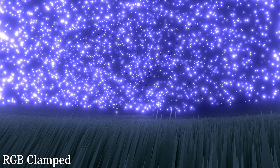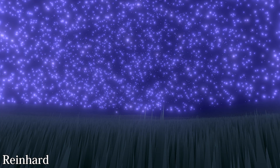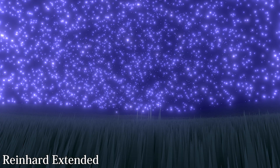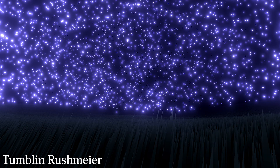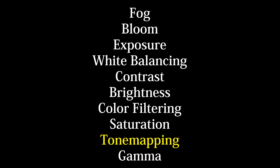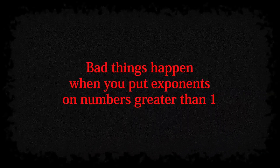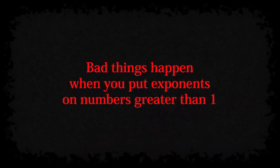Whatever tone mapper you decide to use is up to you. I went through all of the popular tone mappers from 1993 to now, and ironically my favorite is the original Tumblin-Rushmeyer operator — I really like the exaggerated contrast of the scene and the built-in auto exposure. In terms of the post-processing pipeline, tone mapping comes at the very end, just before gamma correction, as gamma correction operates on low dynamic range values only.